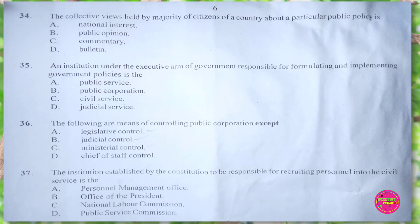Question 37. The institution established by the constitution to be responsible for recruiting personnel into the civil service is the: A. personal management office, B. office of the president, C. national labour commission, D. public service commission. The correct answer is D. public service commission.